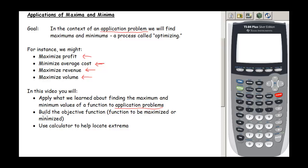We're going to remind ourselves how we build those profit, average cost, revenue, or volume functions. Because those functions, those are our objective functions. These are the functions that are supposed to be maximized or minimized. And then I'm also going to show you how to use the calculator to help locate the extrema.